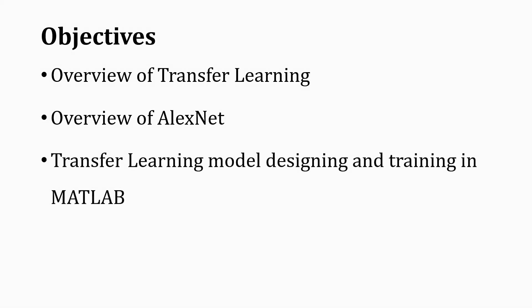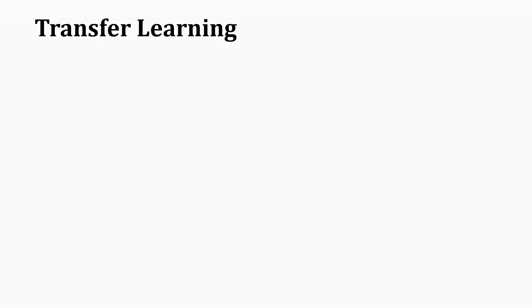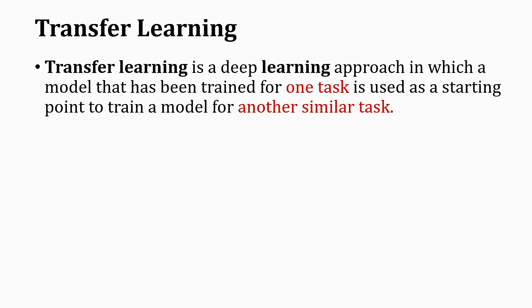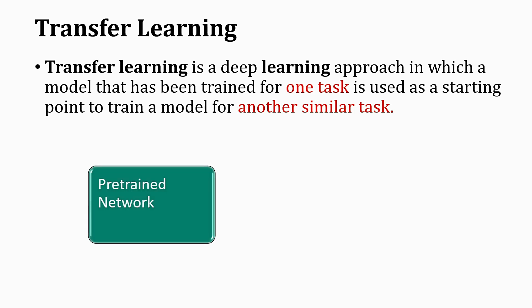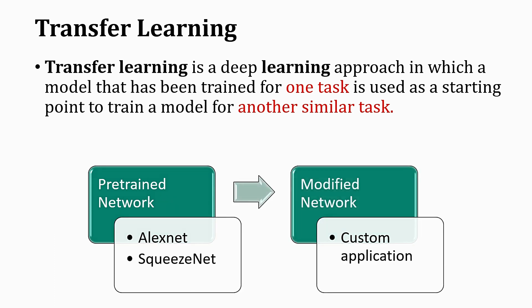Finally, we will test our trained model on different images. Transfer learning is a deep learning approach in which a model that has been trained for one task is used as a starting point to train a model for another similar task. To learn more about transfer learning, you can watch my previous tutorial — I have provided the link in the description.